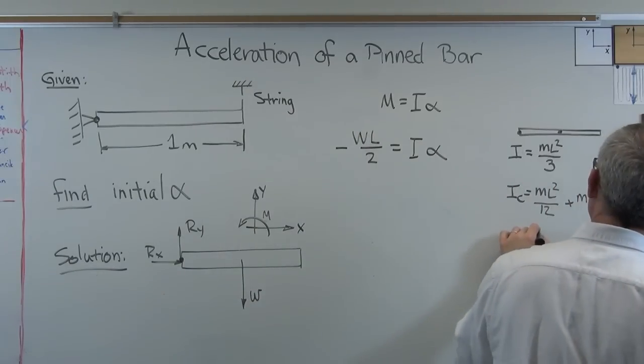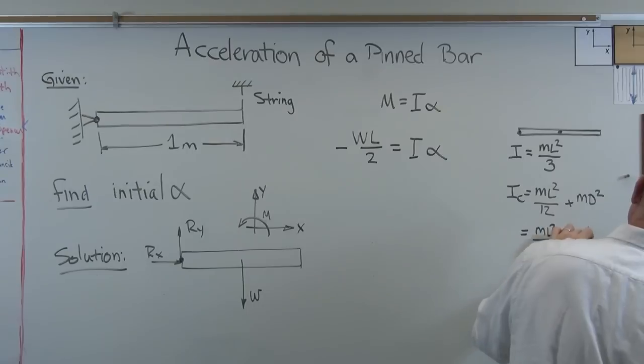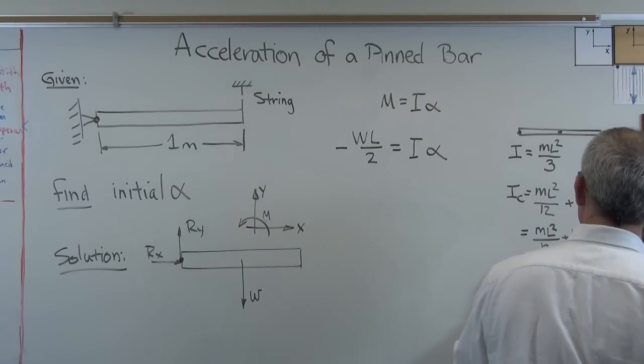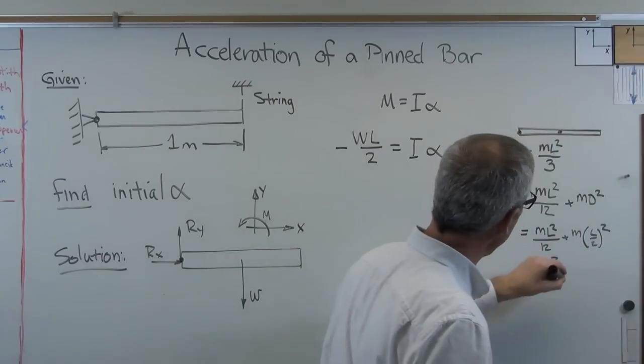Well, that's going to be, let's see, mL squared over 12, plus mass times L over 2 squared. And if you do all that math, what you'll find out is that works out to mL squared over 3, just like that.